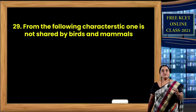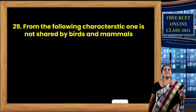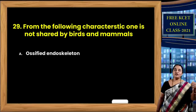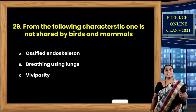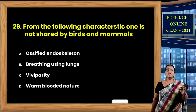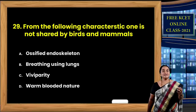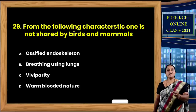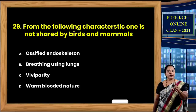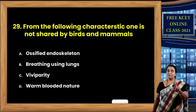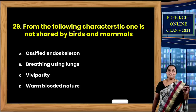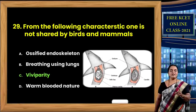Question 29: One characteristic not shared by birds and mammals. Both are well-developed vertebrates. Options: ossified endoskeleton; breathing using lungs (pulmonary respiration); viviparity; warm-blooded nature. Both birds and mammals have ossified endoskeleton, both show pulmonary respiration, both are homeotherms (warm-blooded). However, birds are oviparous while mammals are viviparous. So the characteristic not shared between birds and mammals is viviparity.